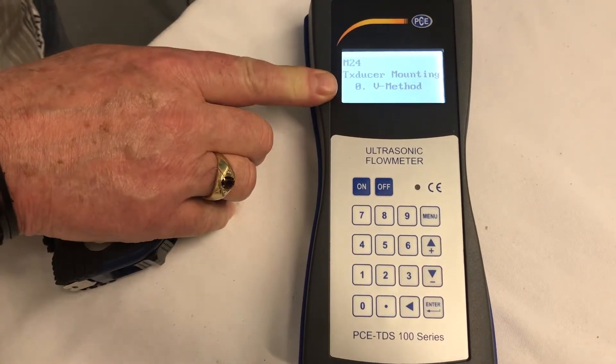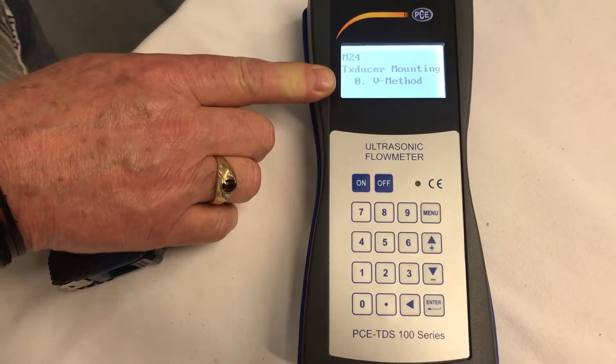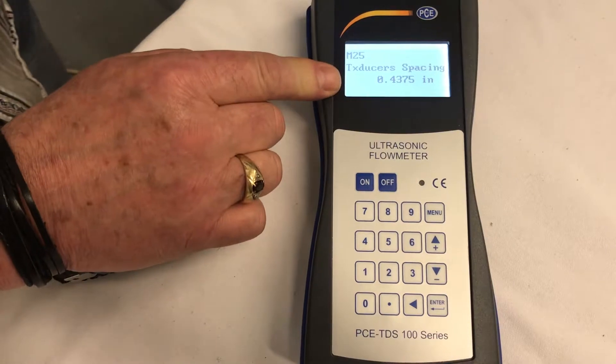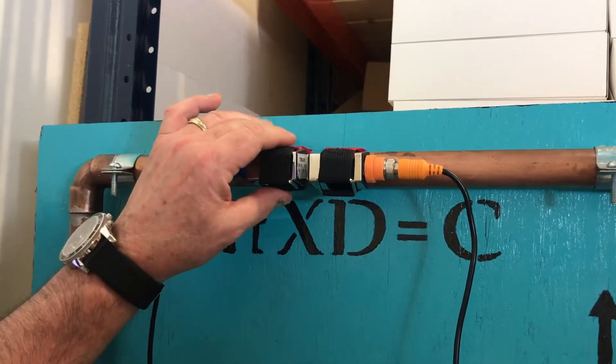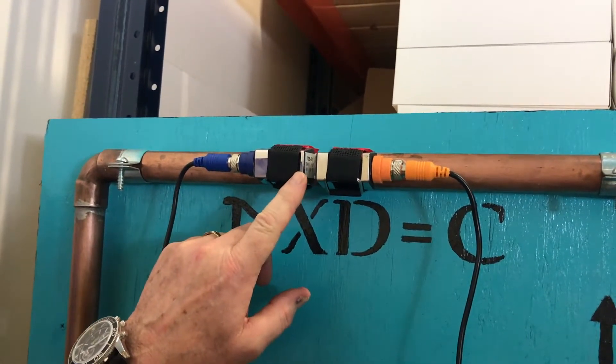Since we have the V method, that will tell us the distance between the sensors that we have to maintain, which is M-25. There's the distance between the sensors that we need. The meter tells us that we need to space the sensors 0.4375.